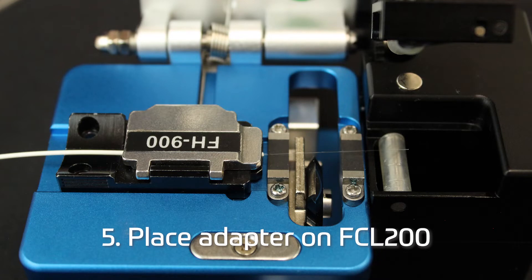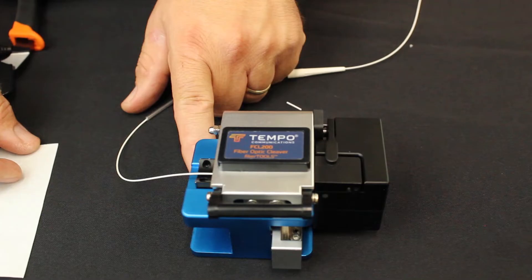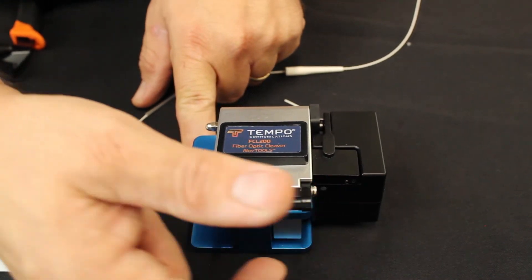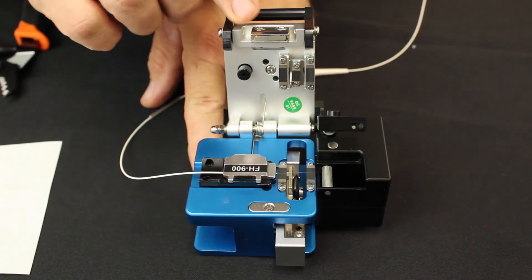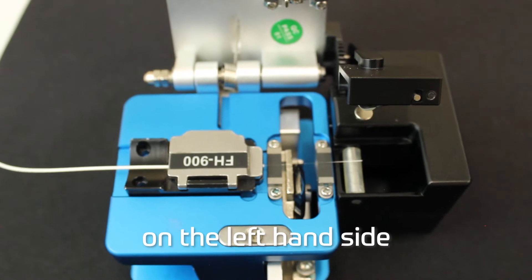Place the adapter with fiber in the FCL200. Place the cleaved fiber still in the fiber adapter into the FSP200 on the left-hand side.